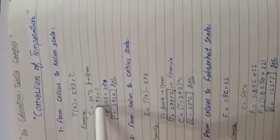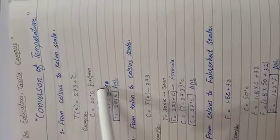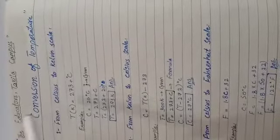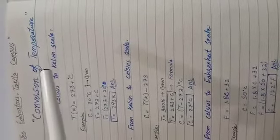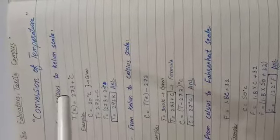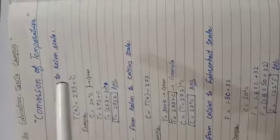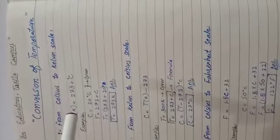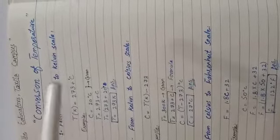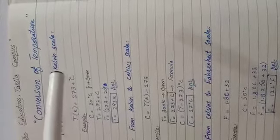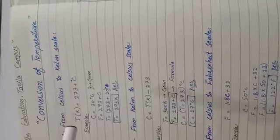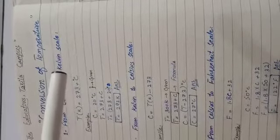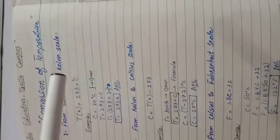For Kelvin to Celsius conversion, the formula is T = 273 + C. If you have the temperature given in Kelvin, you can rearrange this formula to find the equivalent temperature in Celsius.